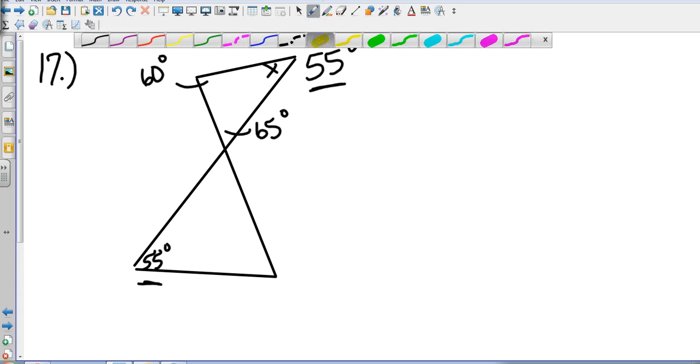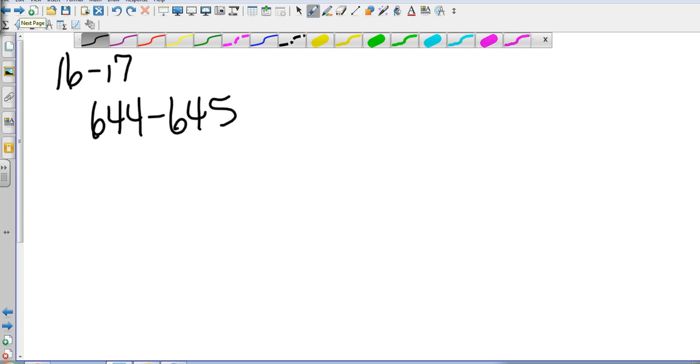Now, these two angles, when I have two lines that intersect, they form vertical angles. Which means that angle also has to be 65. So, now we've got two sets of matching angles. So, we know this one has to be 60. And so, all of these angles are congruent. So, this set of triangles is similar. And some examples of 16 and 17, you can find those on page 644 and 645.